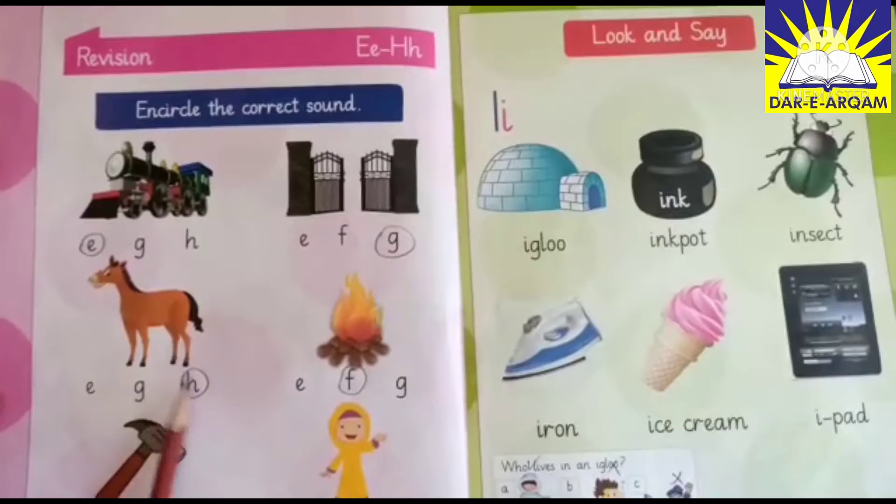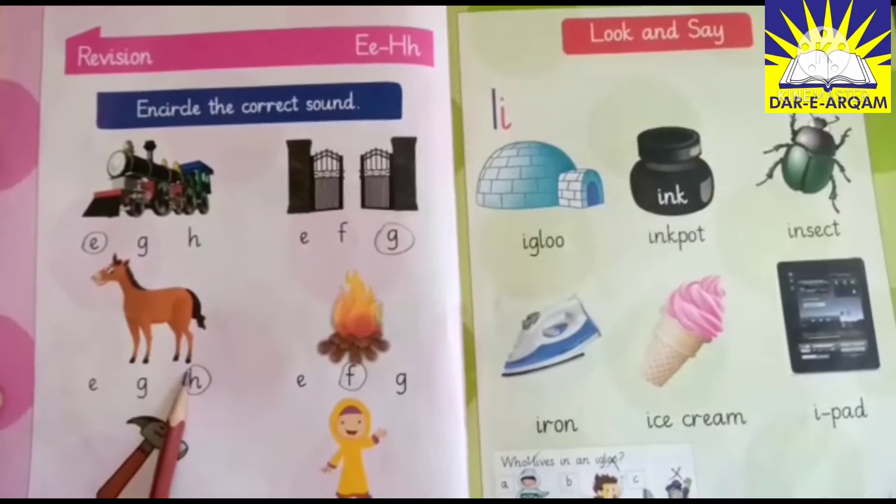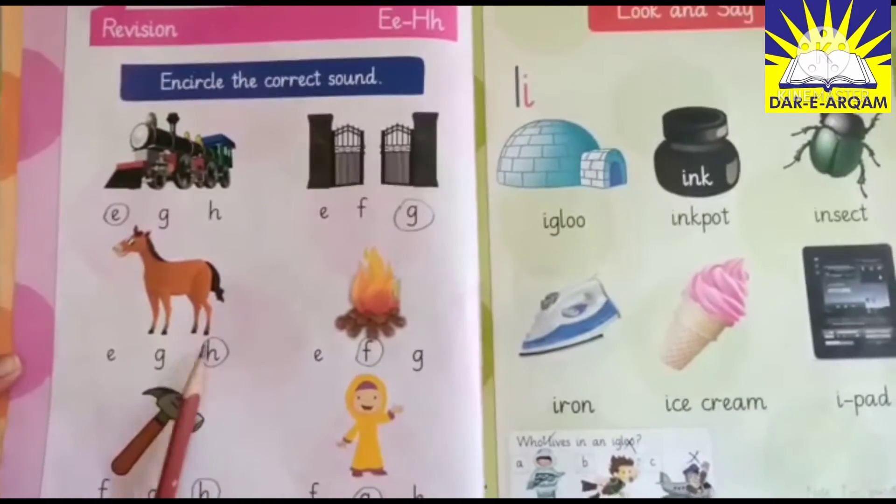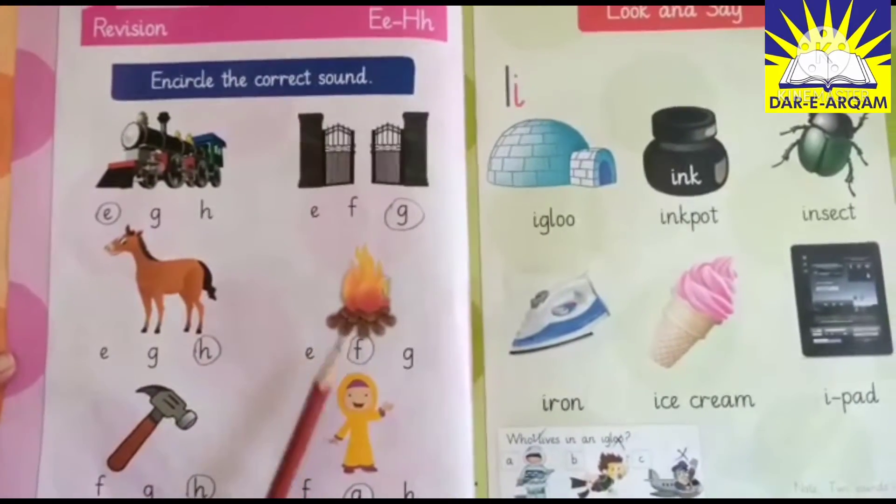Horse beginning sound: H. H — horse. H, circle the fire.